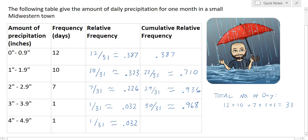And then if I add that again, the cumulative relative frequency for the 4 to 4.9 inch category would be 31 out of 31, which equals 1. So if you do this correctly you should always end with 1. That indicates we've accounted for all of the data.